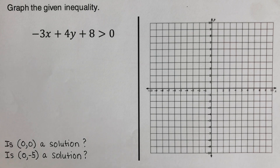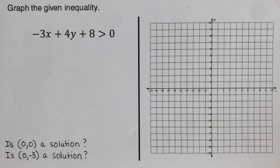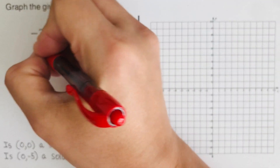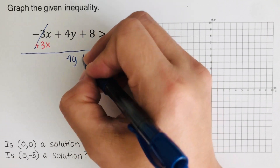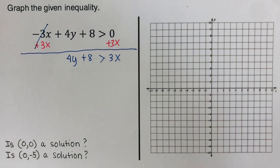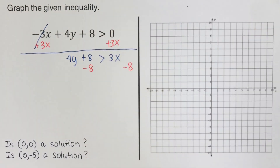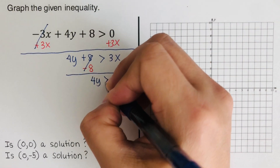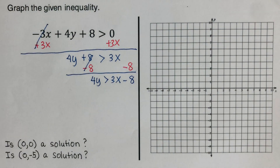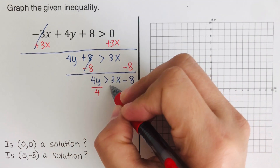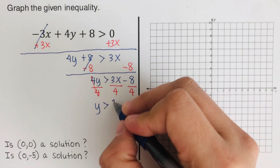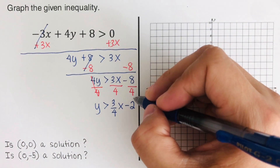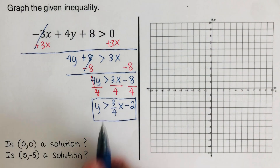This inequality is not in y = mx + b form, so we convert it. We add 3x to both sides, giving us 4y + 8 > 3x. Then we subtract 8 from both sides to get 4y > 3x - 8. Finally, we divide both sides by 4, leaving y > (3/4)x - 2. This is our equation in slope-intercept form.